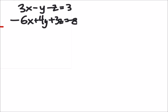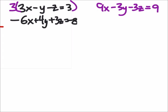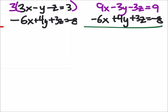Now I need the coefficient of z to be a negative three, which means all I need to do is multiply the equation by three. So that gives me nine x minus three y minus three z, which is what we wanted, equals nine. And the second row didn't change. Which means that all I need to do is add these two together and my z's will be eliminated. So nine x plus negative six x is three x. Negative three y plus four y is one y. The z's cancelled out, they became zero. And nine plus negative eight is one.